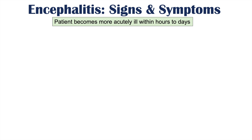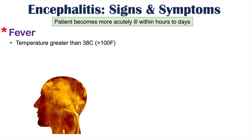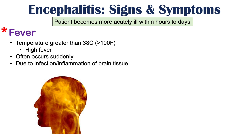After those prodromal symptoms, the patient becomes more acutely ill within hours to days. One important sign that occurs after the prodromal phase is fever. Oftentimes the temperature is greater than 38 degrees Celsius or greater than 100 degrees Fahrenheit, but it is often even higher — a high fever that can occur suddenly due to infection and inflammation of brain tissue.